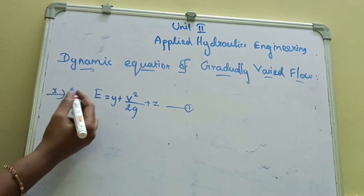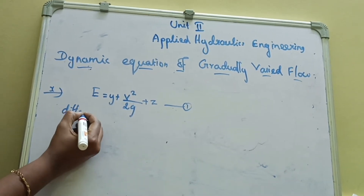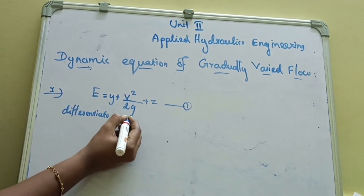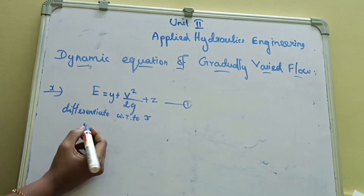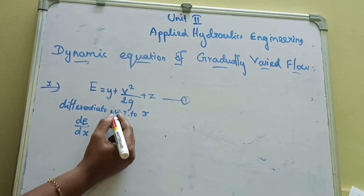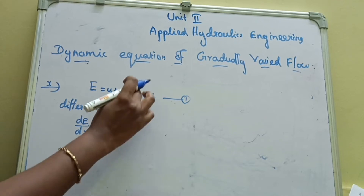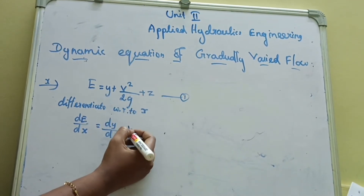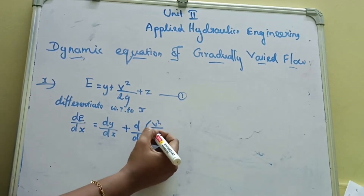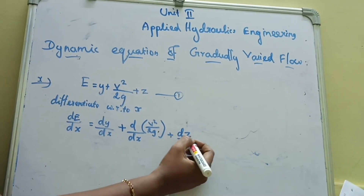Here the flow is in the x direction. Since the flow depth changes along x, we differentiate the energy equation with respect to x. So dE/dx equals dy/dx plus d/dx of (v-squared divided by 2g) plus dz/dx. Next, dE/dx equals dy/dx, and since 1/2g is a constant, it comes outside: 1/2g into d/dx of v-squared, plus dz/dx.